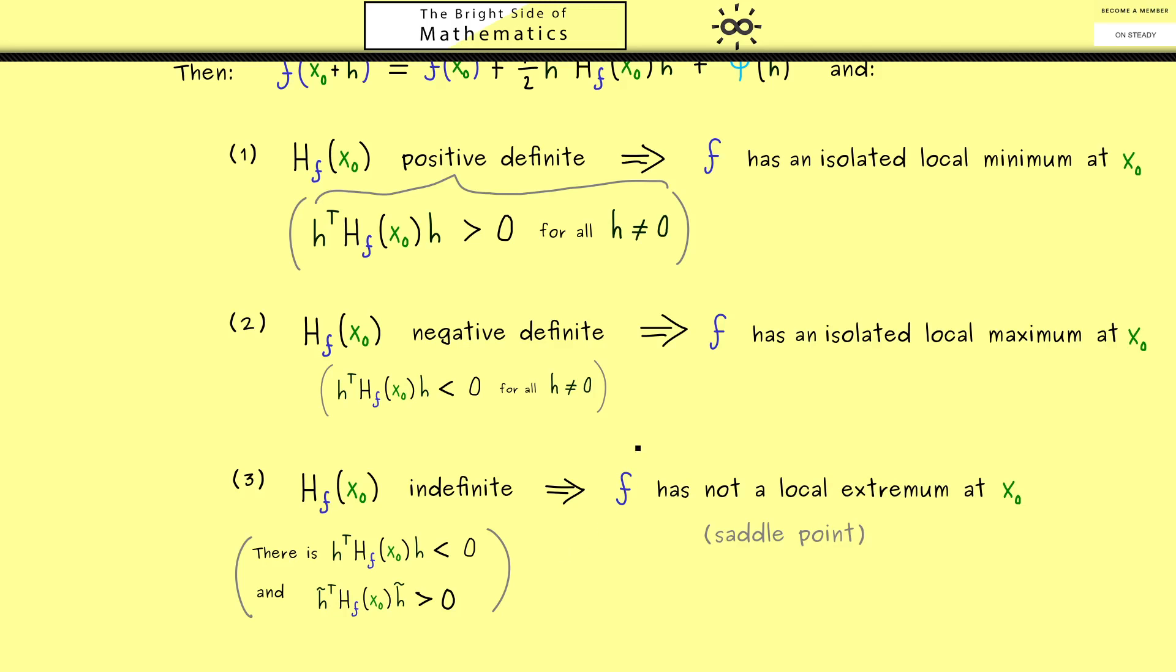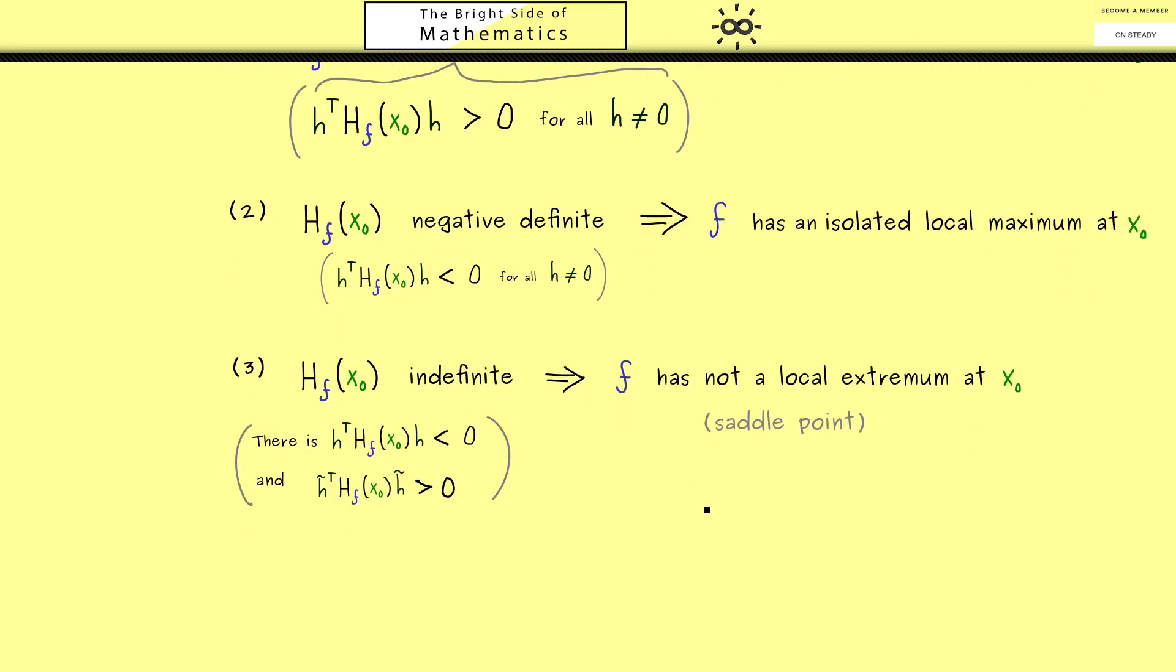So in summary, you see we have three nice conditions that decide if we have a local extremum or not. However, it's also possible to find a nice statement if we go the other direction. This means we put in as an assumption that we already know that f has a local extremum at x_0. And then we can conclude something for the Hessian matrix.